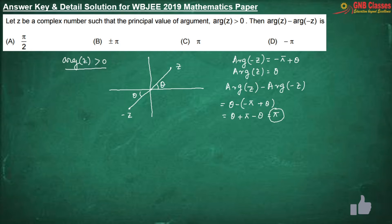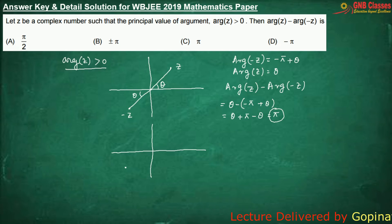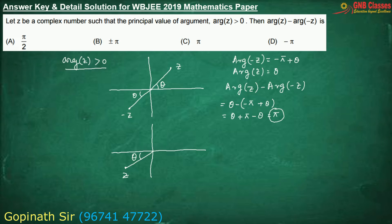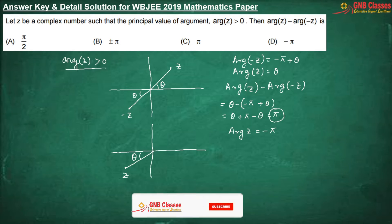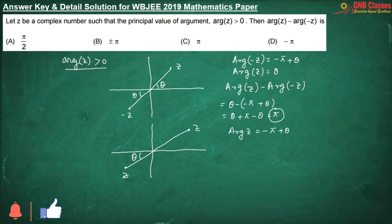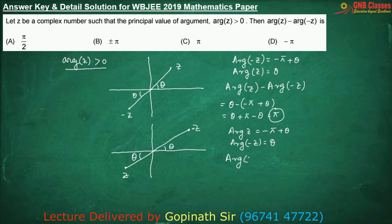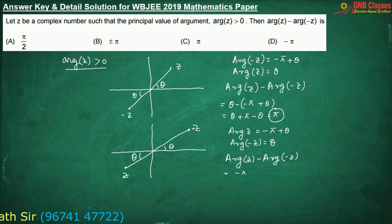It can also happen that z is in the third quadrant. If this angle is theta, argument of z in the second case will be minus pi plus theta. And minus z will be somewhere in the first quadrant, with argument theta. So argument of minus z in this case is theta only. Therefore, the required value is minus pi plus theta minus theta, which gives minus pi.